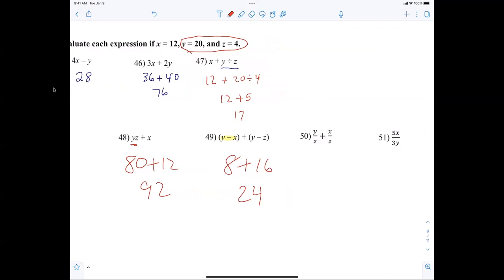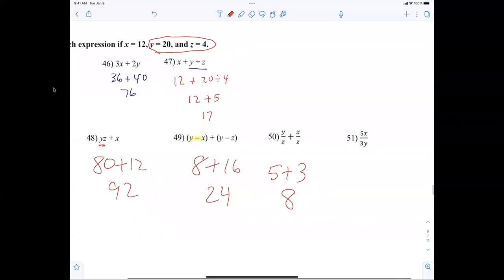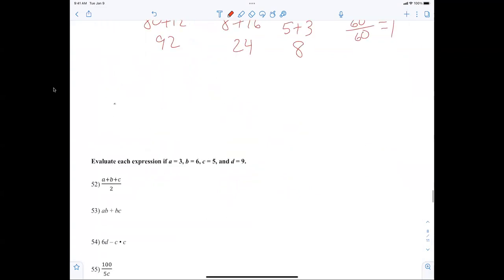Now, Y minus X first. What's Y minus X? What's Y minus X? Help me. What's Y minus X? 8, right? Plus. What's Y minus Z? That's 16. And there you have 24. Everybody's good on that? Now, what's Y divided by Z? Y divided by Z, guys. 5 plus what's X divided by Z? 3. 5 plus 3 today is 8. All right. Now, for 51. 5 times X. 60 divided by what's 3 times Y? 60. 60 divided by 60. Yeah, it's 1.